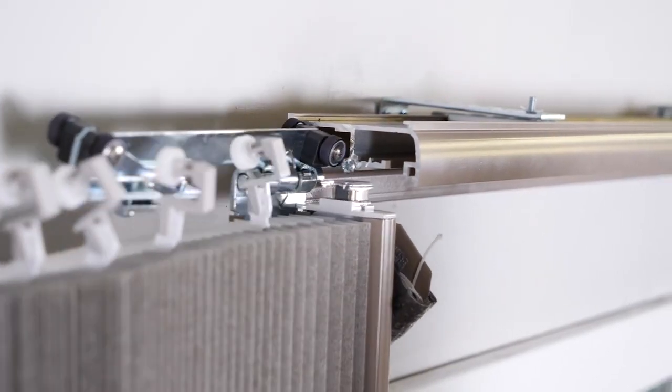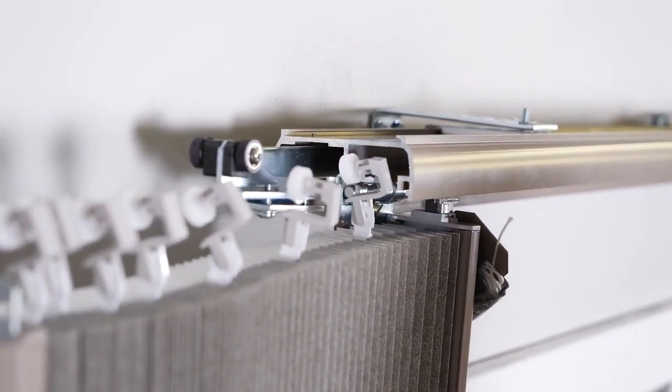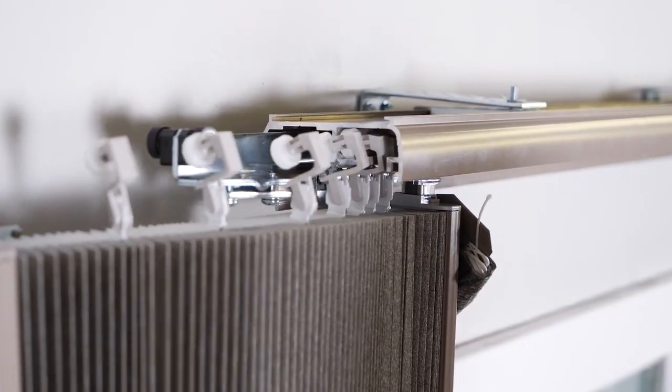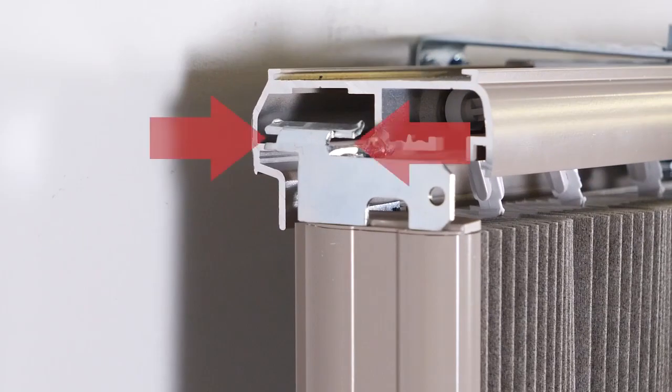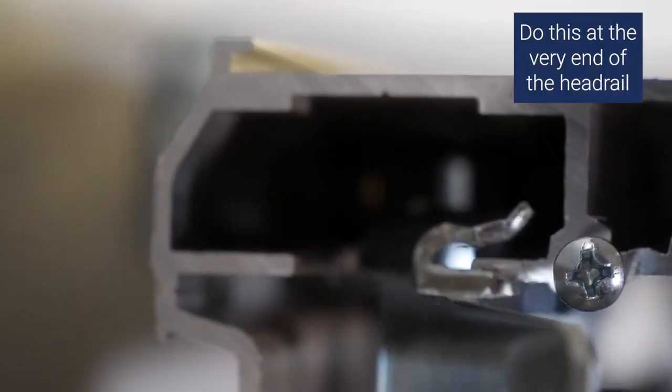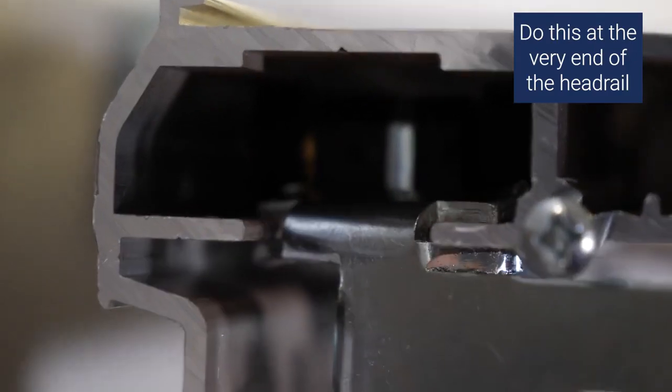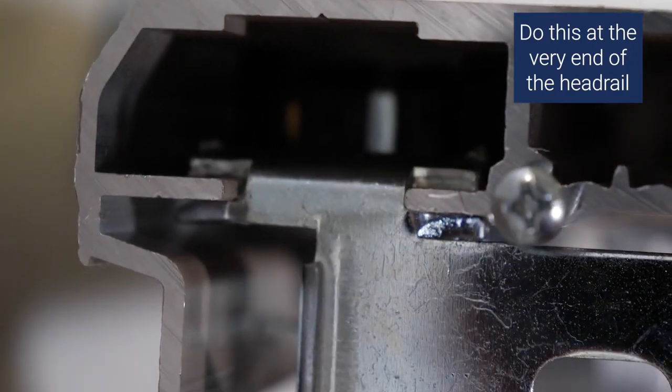Slide the wheels of the moving rail into the rear channel, and slide the wheels of the fabric clips into the front channel. The top stationary rail bracket has two slots that grip the rear channel of the headrail. Position the slots onto the rear channel as shown, then twist the rail 90 degrees to lock it into place.